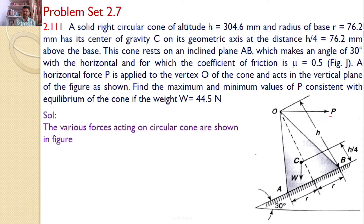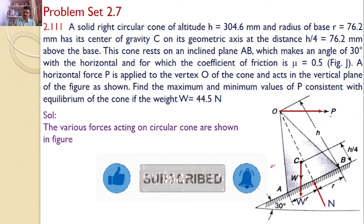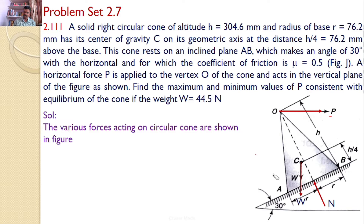Now let us consider the free body diagram. The various forces acting on the cone are: first, the self-weight W; second, the applied force P in the horizontal direction; third, the normal reaction N; and fourth, since we are assuming the cone is about to slide in this direction, a frictional force acts in the upward direction, equal to 0.5 times N. There are four forces total.